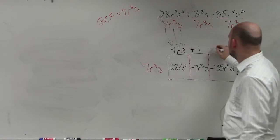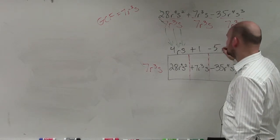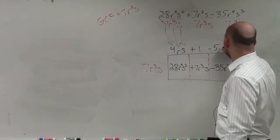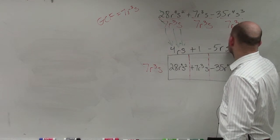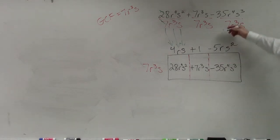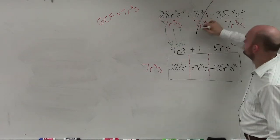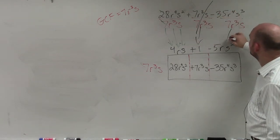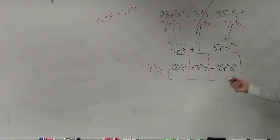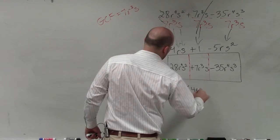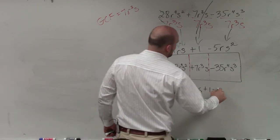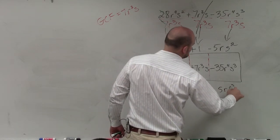And then over here, it's going to be negative 5. Yeah, r. And then s squared. And you could have done that by, as you guys can see, that divides to 1. And then if you were to divide them all, you'd get the same answer. So therefore, our factored form is 7r cubed s times 4rs plus 1 minus 5rs squared.